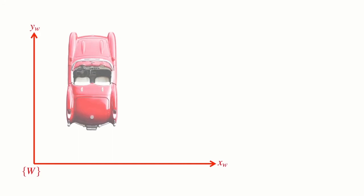Let's have a look at a slightly more realistic example. Here I have a two-dimensional car and a two-dimensional coordinate frame. I've labeled this coordinate frame W, and that stands for the world coordinate frame. This is quite a common thing in robotics — to have one reference frame that all other reference frames are described with respect to. To indicate that very clearly, I've labeled the X and Y axes with the subscript W.